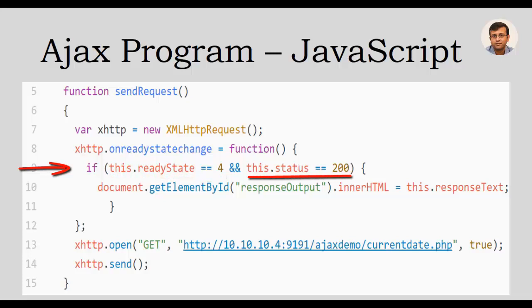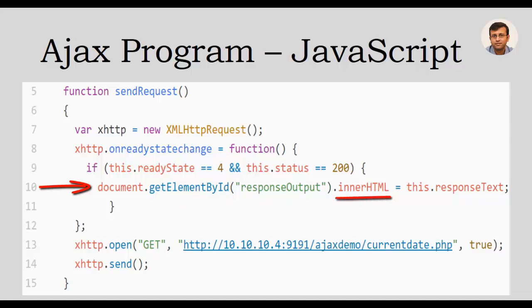The value of the readyState property is modified once the browser receives the response. We also have the status property on the same line. The status property signifies the HTTP status code, where a code of 200 signifies the OK HTTP status code. On line 10, we have the getElementById function of the document object in JavaScript, which is used to get or set an HTML element. innerHTML is used to get or set the HTML content of an element. We retrieve the div element whose ID is 'response output' and assign the response text using innerHTML.